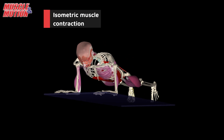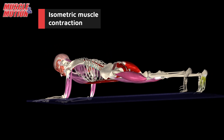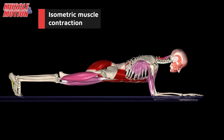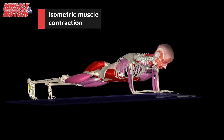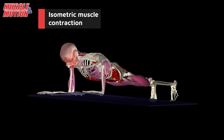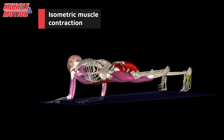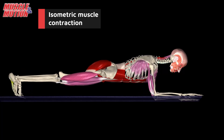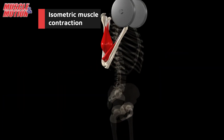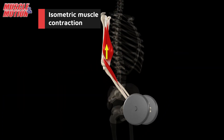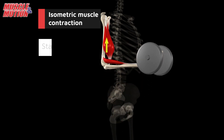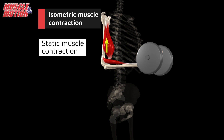The second type of muscle contraction is isometric muscle contraction. Unlike isotonic muscle contraction, in isometric contraction there is no change in muscle length during contraction. For example, in the plank exercise, the rectus abdominis stabilizes the trunk without a change in its length. In the bicep curl, isometric contraction means you would stop and statically hold the weight without flexing or extending your elbow.